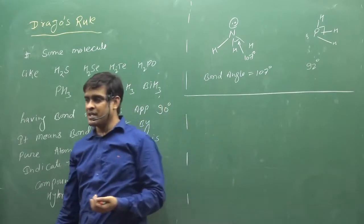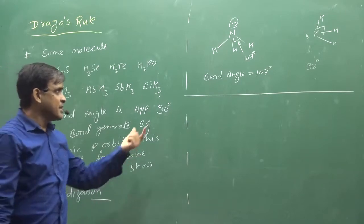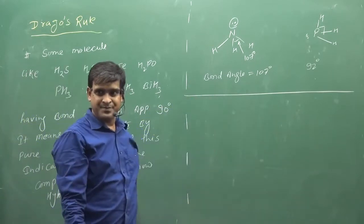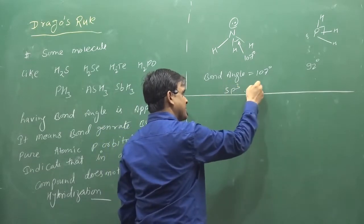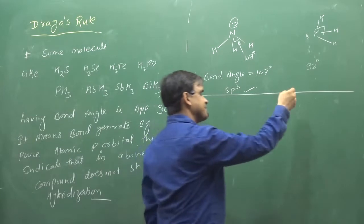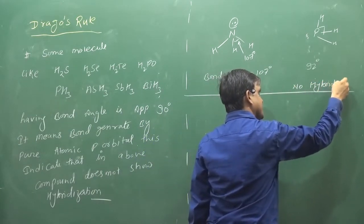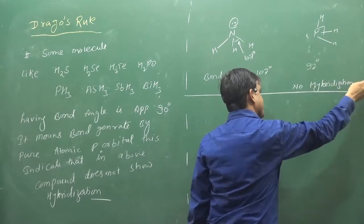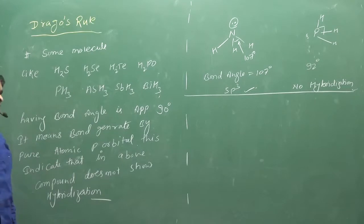So we will go more correct in this direction. So we will say 100% SP3. SP3 hybridization? We will say no hybridization. No hybridization option of absence, we will say SP3.